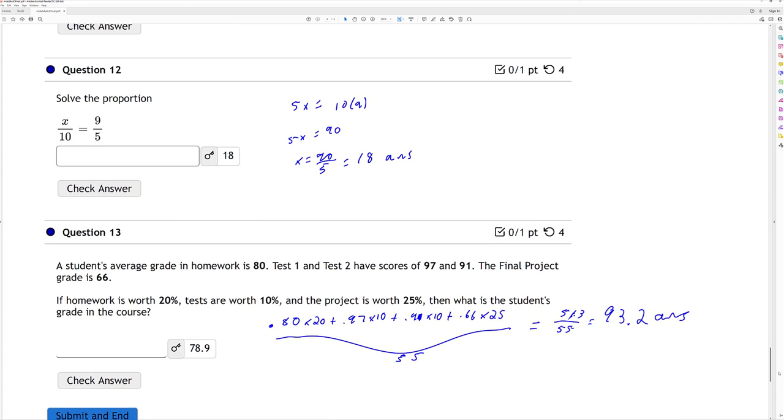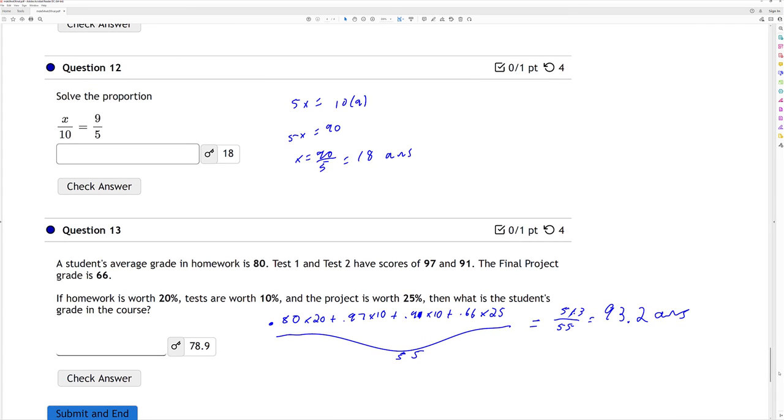Question 12. Solve the proportion. Cross multiply and divide. 5x is equal to 10 times 9. 5x is equal to 90. x is equal to 90 divided by 5, which is 18.